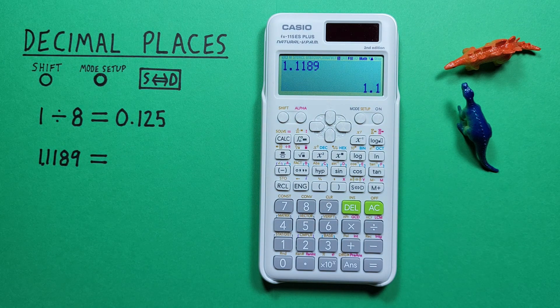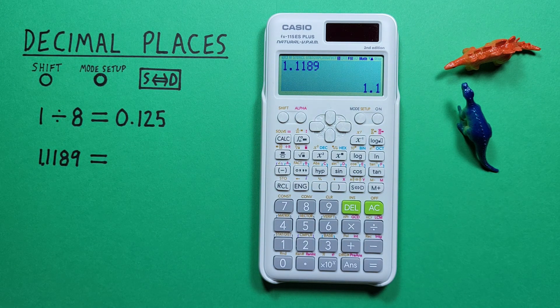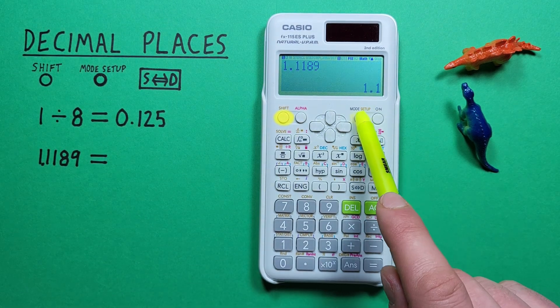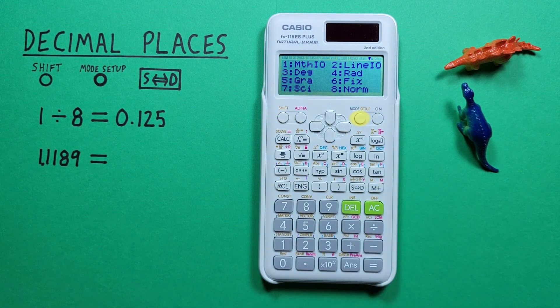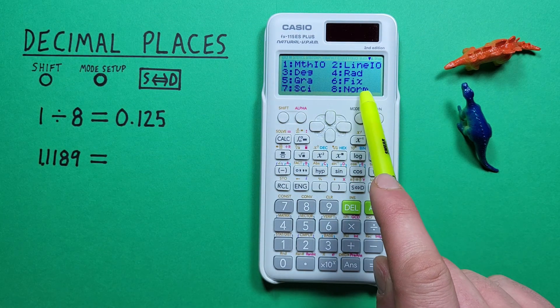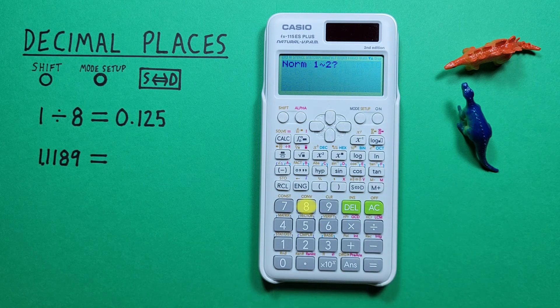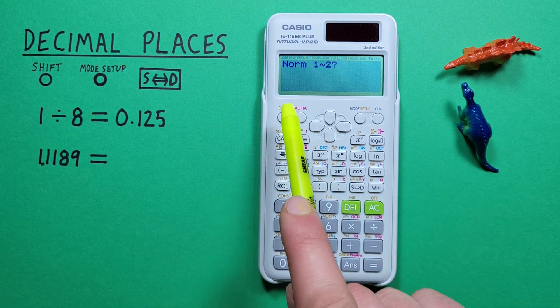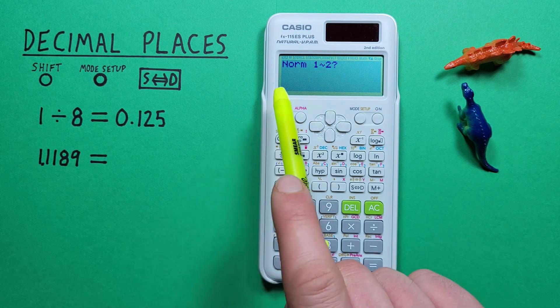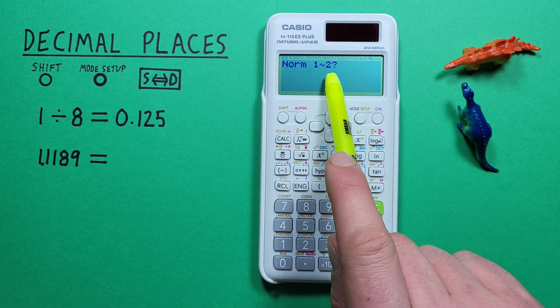If we're done with this and want to go back to normal mode or stop rounding what we can do is press shift mode again back to this menu and we want to choose number 8 or norm normal mode. So we press 8 and now it's going to ask us norm 1 or norm 2. And we want to choose normal mode 2 in this case. So we'll go 2.